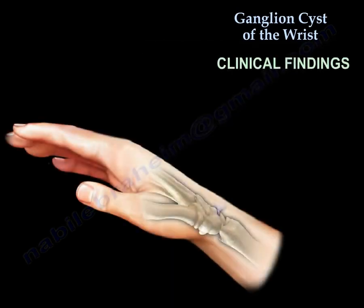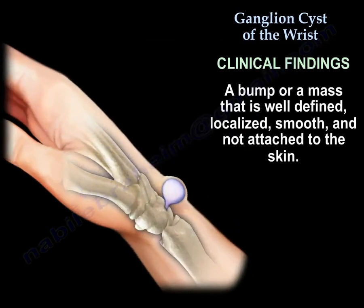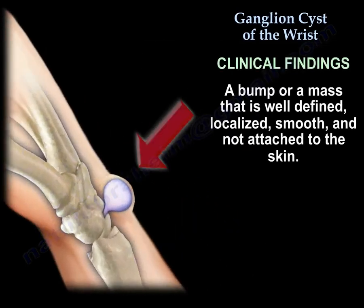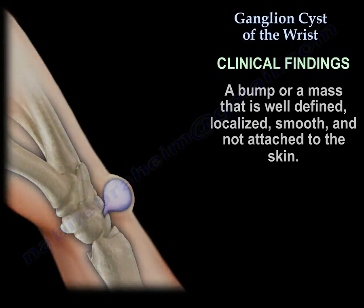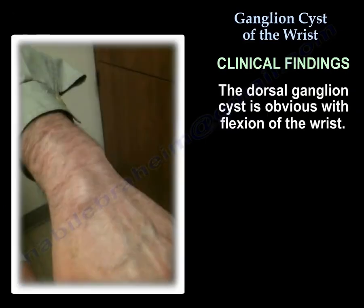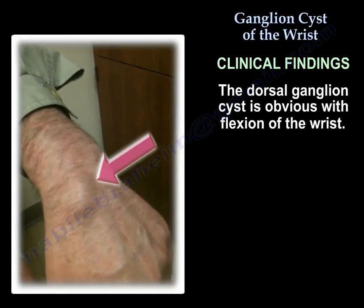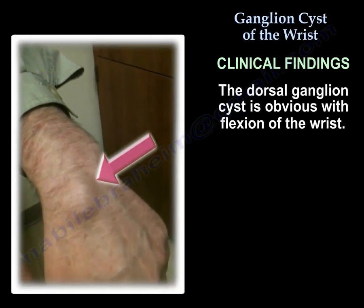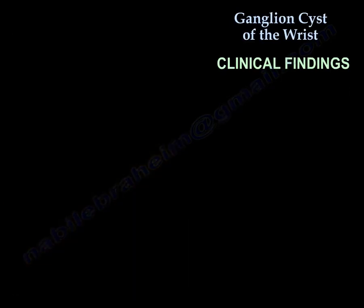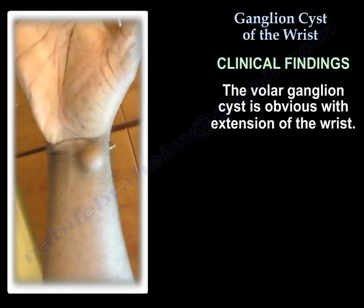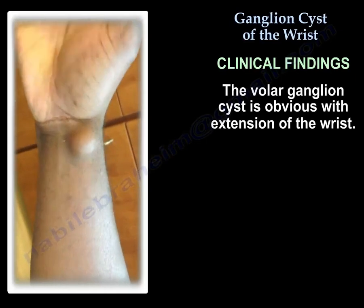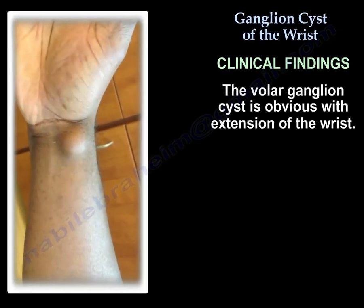Clinical findings: a bump or mass that is well-defined, localized, smooth, and not attached to the skin. The dorsal ganglia is obvious with flexion of the wrist, and the volar ganglia is obvious with extension of the wrist.